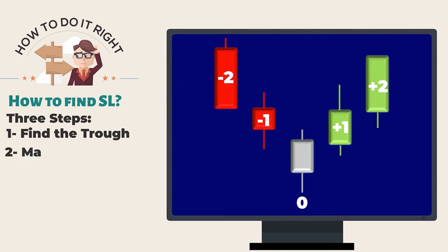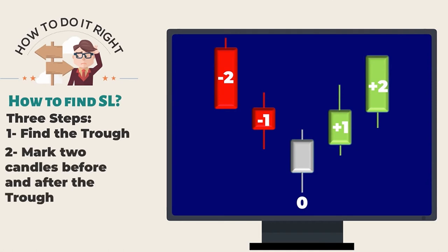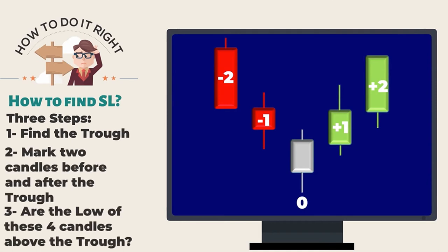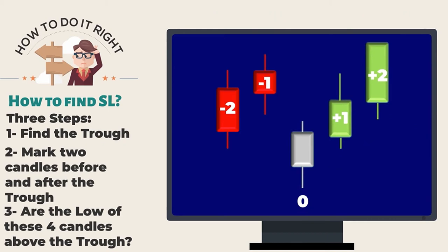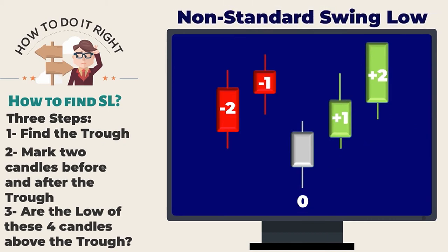As mentioned earlier on the three-step processes of identifying swing low, the standard swing low is formed when the low of the four candles are sequentially higher than the low of the trough zero candle. However, the non-standard swing low is formed when the low of four candles are higher than the low of the zero trough candle, but not in a sequential order.